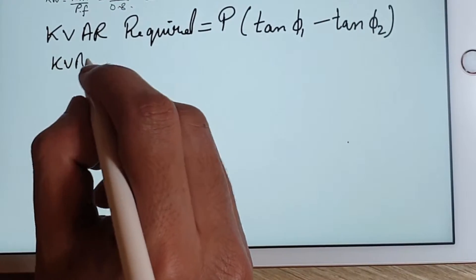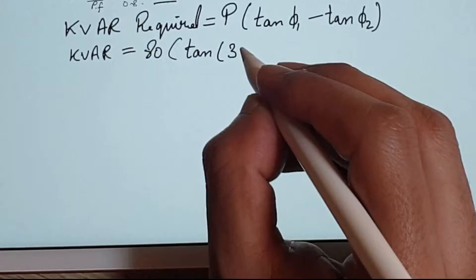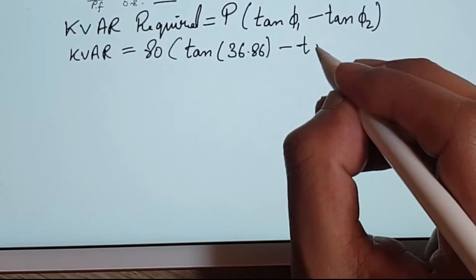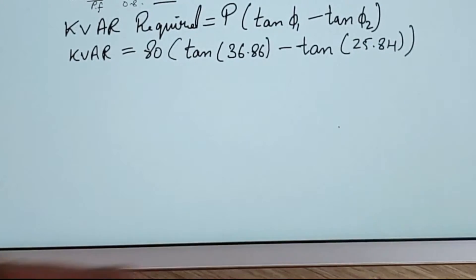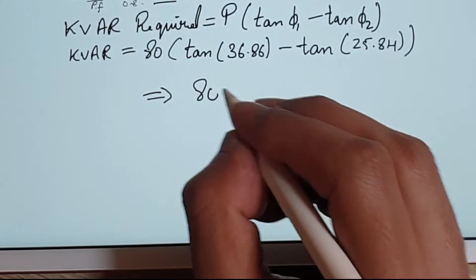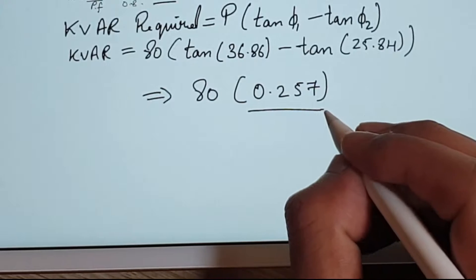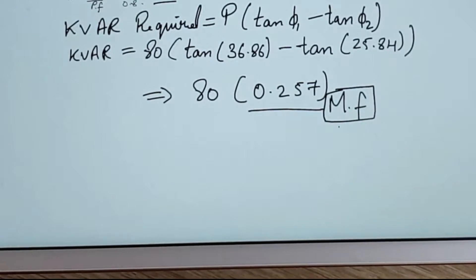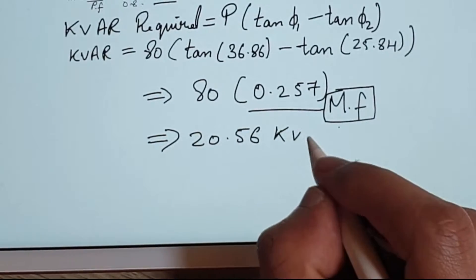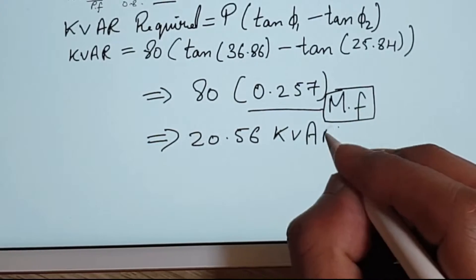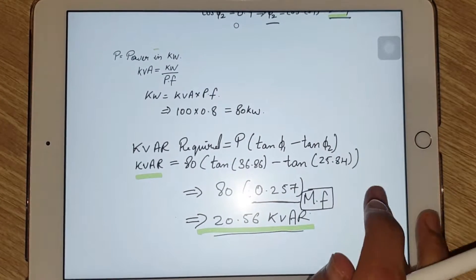Substituting into the required KVAR formula: P × (tan θ1 − tan θ2) = 80 × (tan 36.86° − tan 25.84°). This gives 80 × 0.257, where 0.257 is the multiplying factor (tan θ1 − tan θ2). So 80 × 0.257 = 20.56 KVAR, which is the required KVAR for improving the power factor from 0.8 to 0.9.